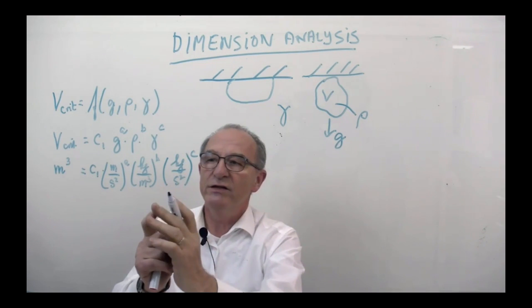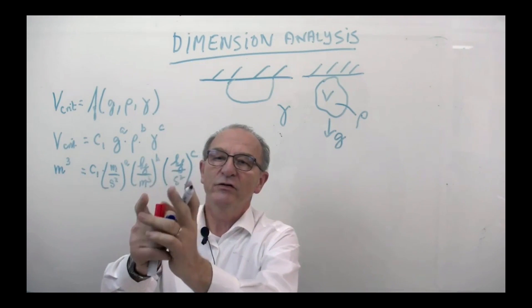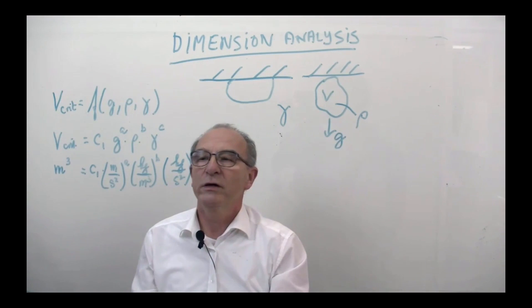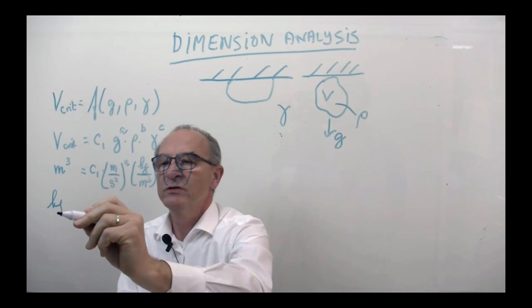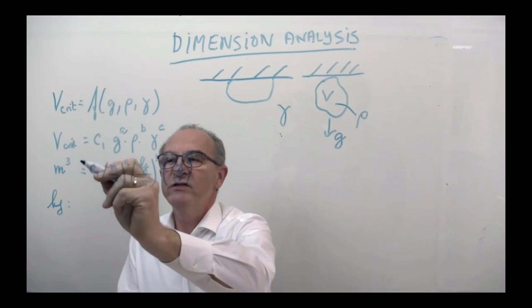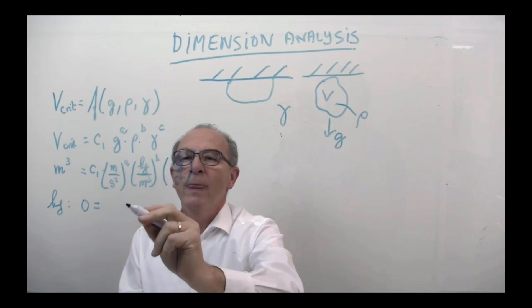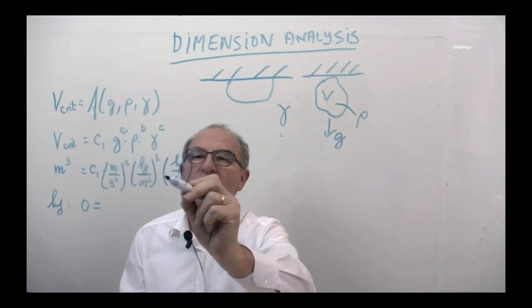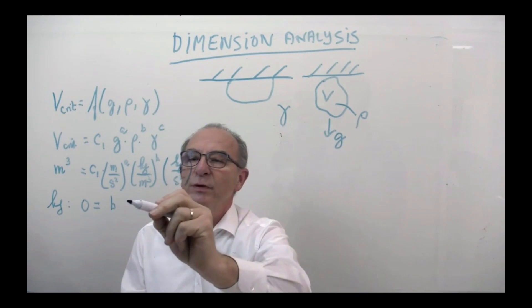Now you have to look at the dimensions left, and the dimensions on the right side should be equivalent, so if you now write down three equations, let's say in the kilograms, on this side there are no kilograms, so zero is equal to, now we look at the right side, and we see B and we see plus C.